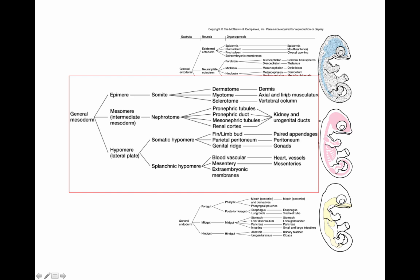The intermediate mesoderm, or mesomere, gives rise to the urogenital system — we'll look at that in more detail later in the semester. The lateral plate mesoderm, or hypomere, divides into the somatic and splanchnic hypomere, forming the coelom and giving rise to lateral paired appendages seen in gnathostomes, some reproductive structures, and the splanchnic lateral plate mesoderm also plays a role in forming the heart and blood vessels.